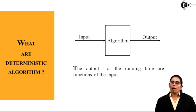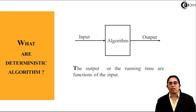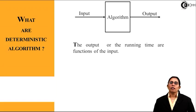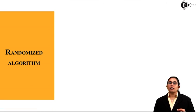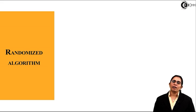Now what happens when these deterministic algorithms are changed or introduced with some random variables? Then comes into picture a randomized algorithm. Now what happens in a randomized algorithm?